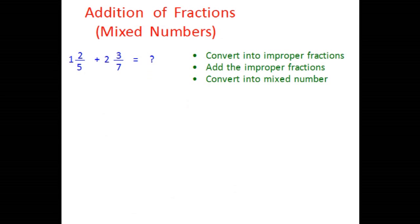Here are the improper fractions. We multiply the whole number and the denominator: 5 times 1 is 5, then add the numerator — 5 plus 2 is 7. So the first fraction is 7 over 5. For the second fraction: 7 times 2 is 14, and 14 plus 3 is 17. So the second one is 17 over 7.